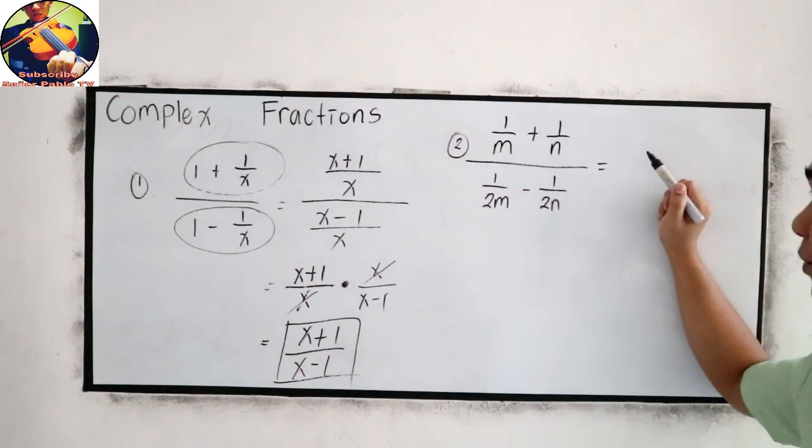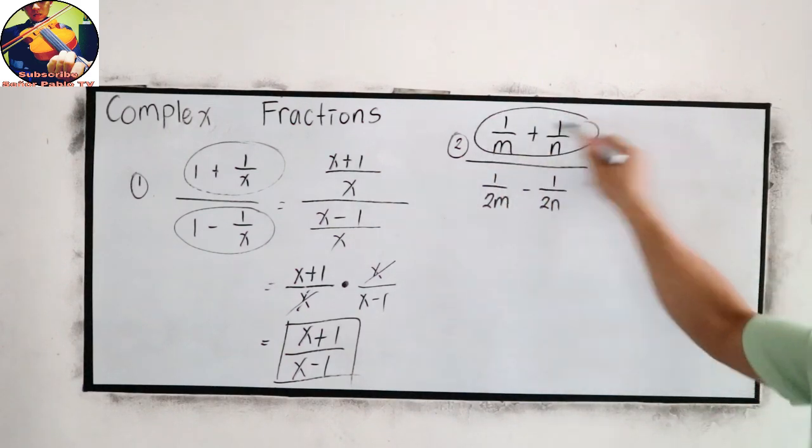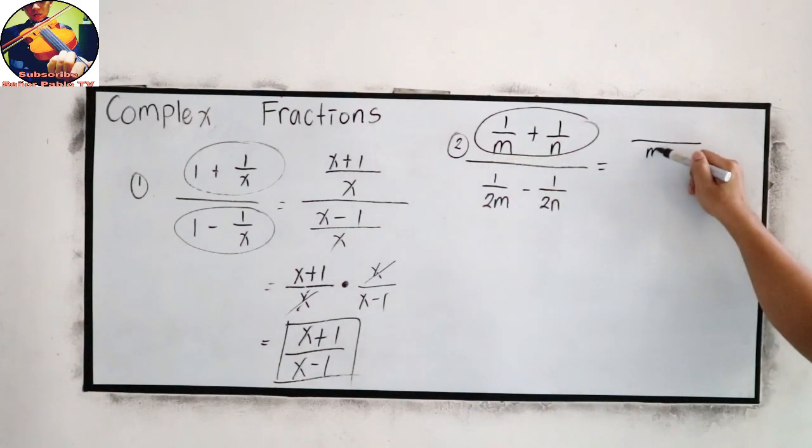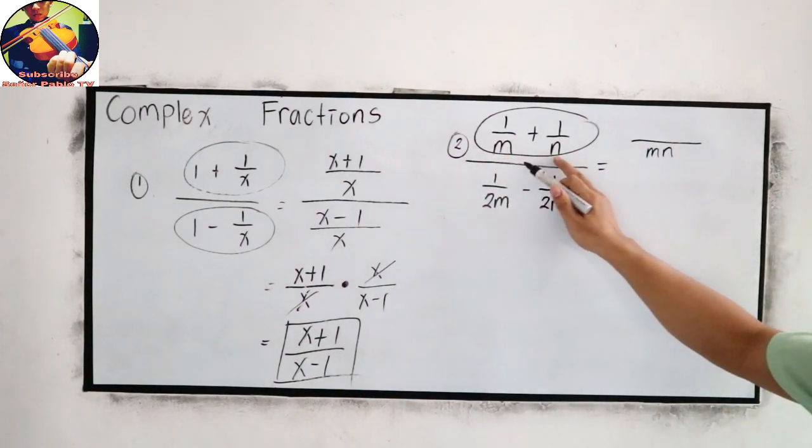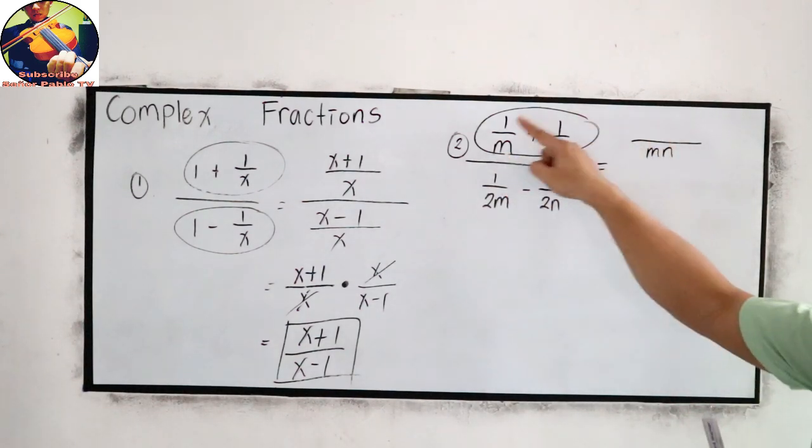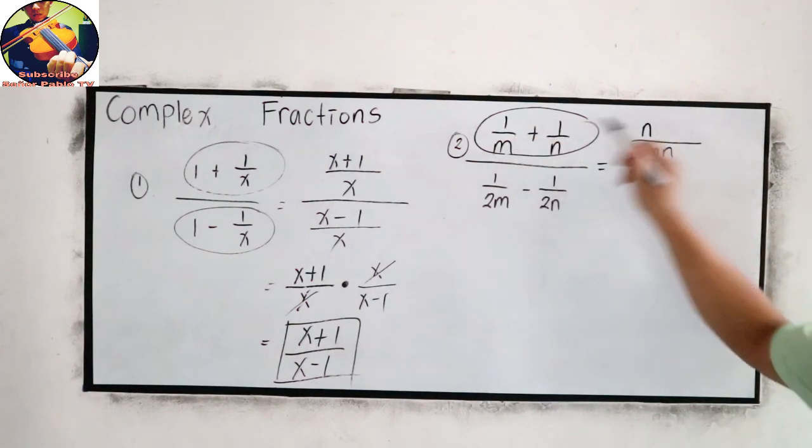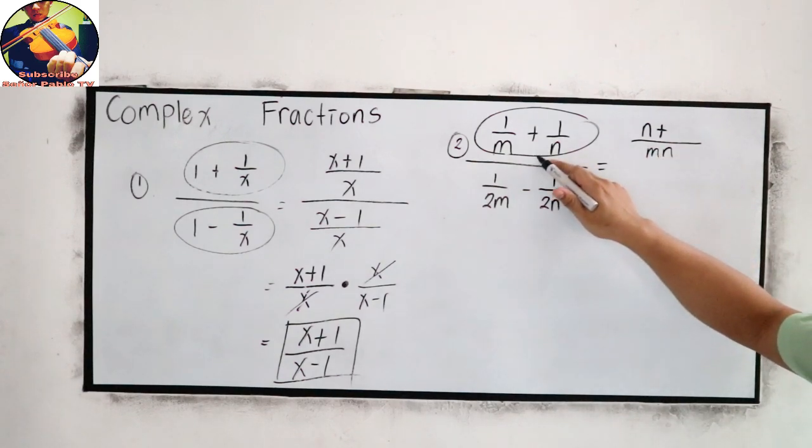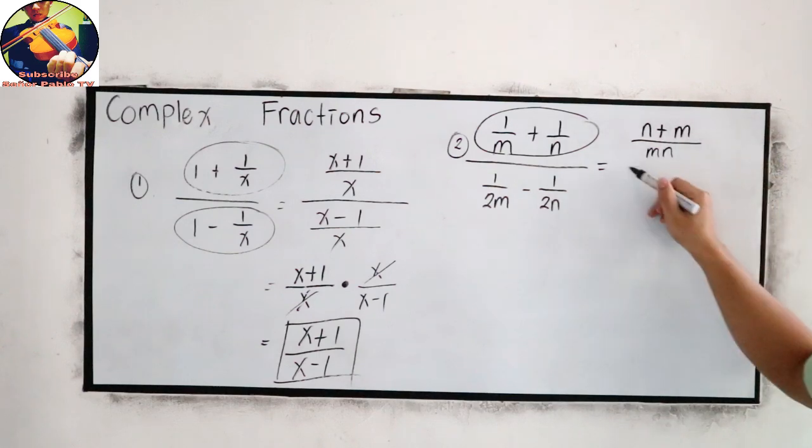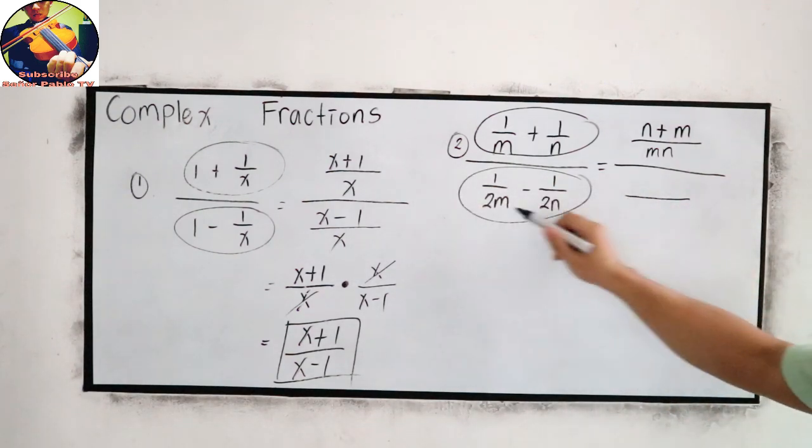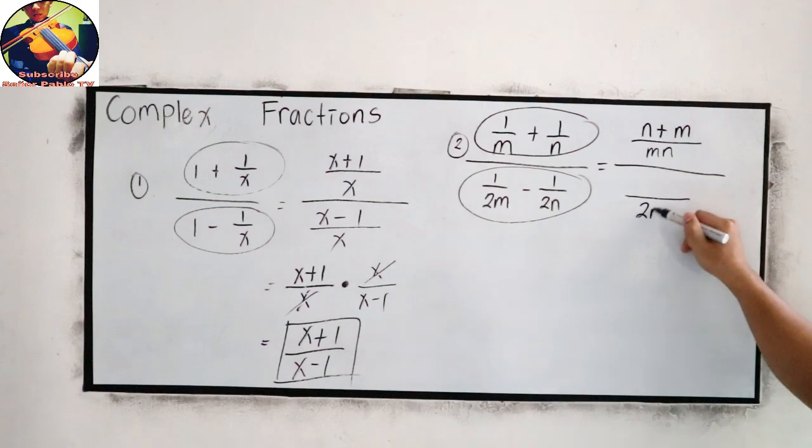Let's check number 2. Our numerator, denominator, get the LCD. In this case, we have mn. mn divided by m, that is n. N times 1, so n. Plus, mn divided by n, that is m times 1, which is m.